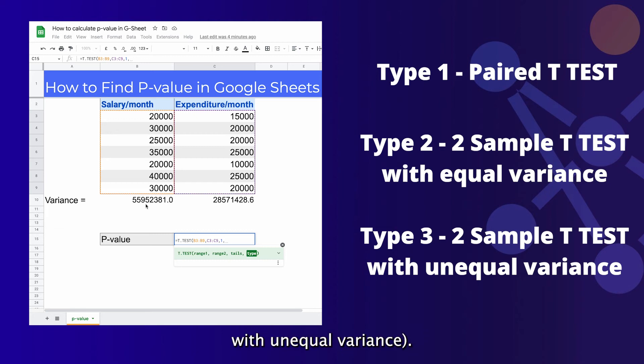Our data contains two separate samples, so the type can either be two or three. We have already calculated the variance of these two data using the VAR function and they are not equal, so we'll use type 3 for the type parameter.